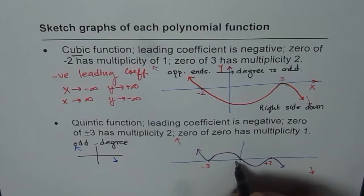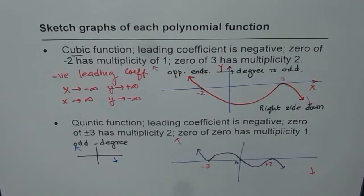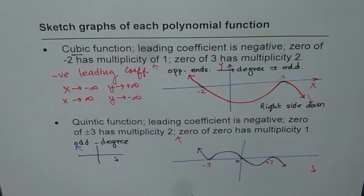I hope the points are absolutely clear. So when we are talking about odd degree function, opposite ends is the end behavior. Leading coefficient negative means right side down. And multiplicity means linear straight line. Even means bounces like a parabola. I think that should help. Thank you and all the best.